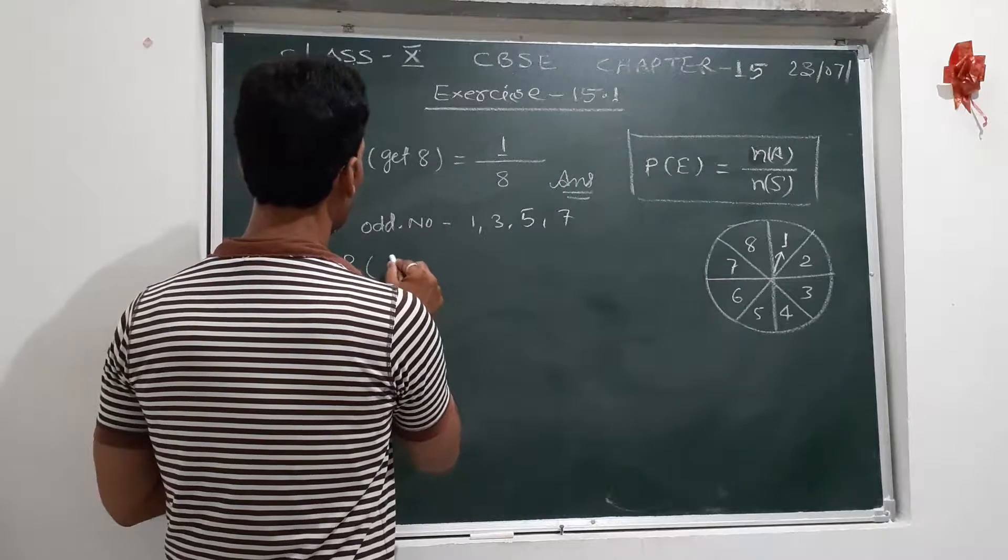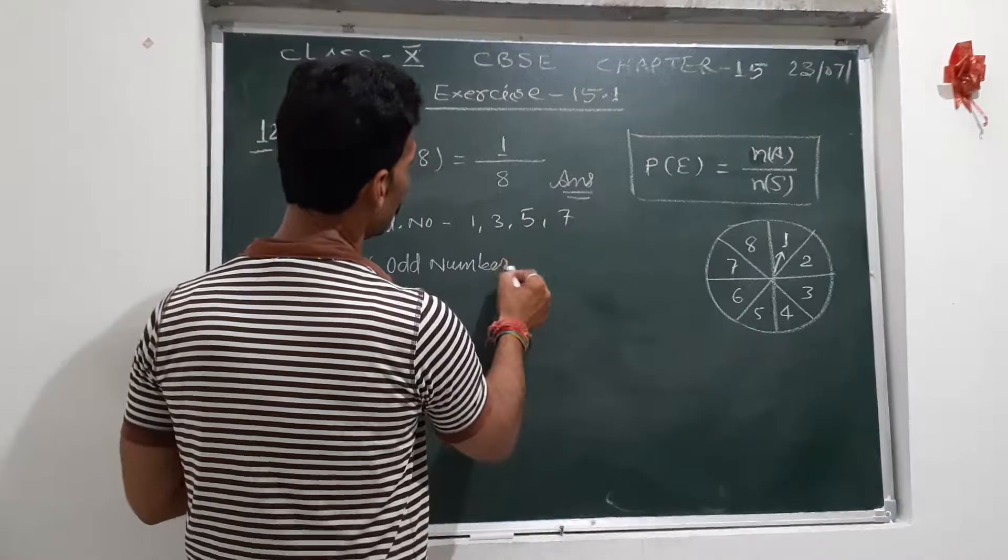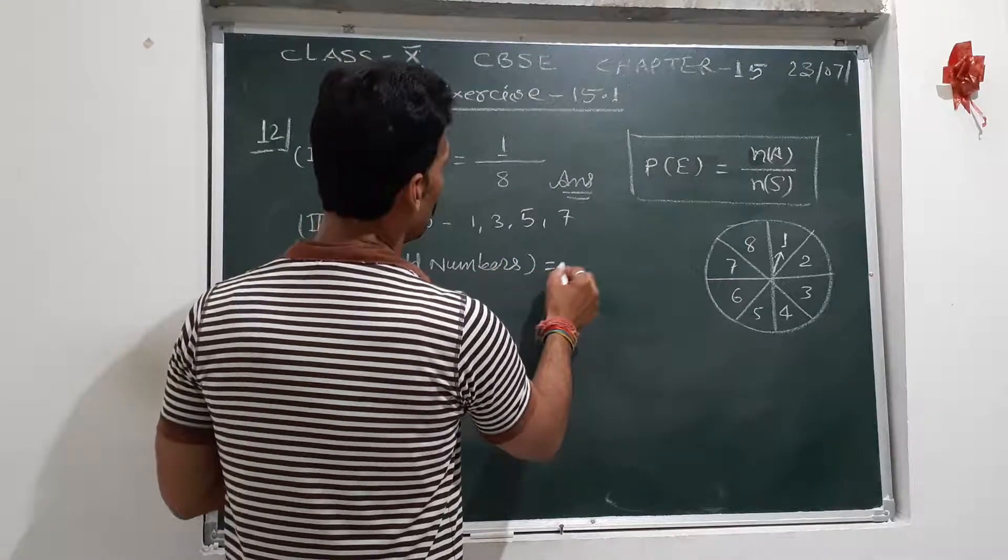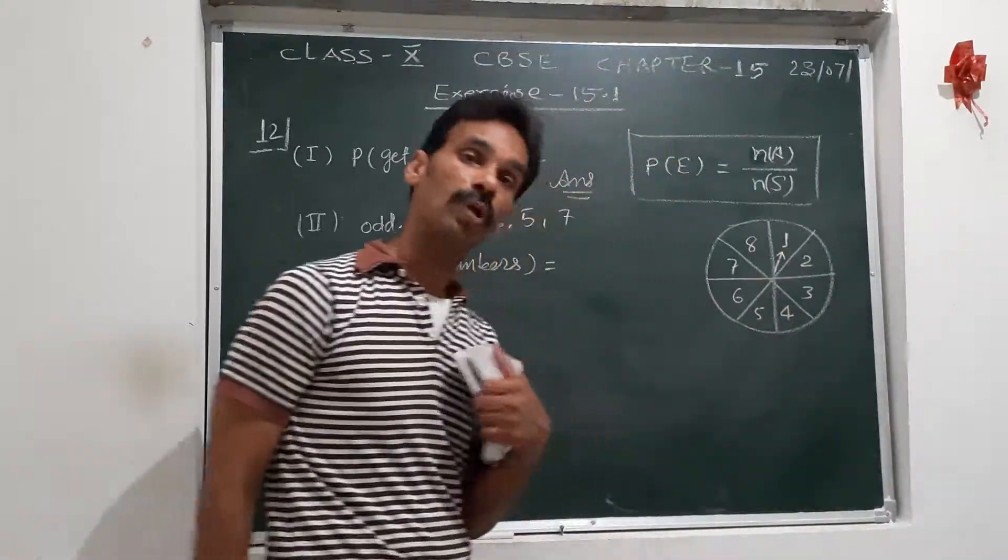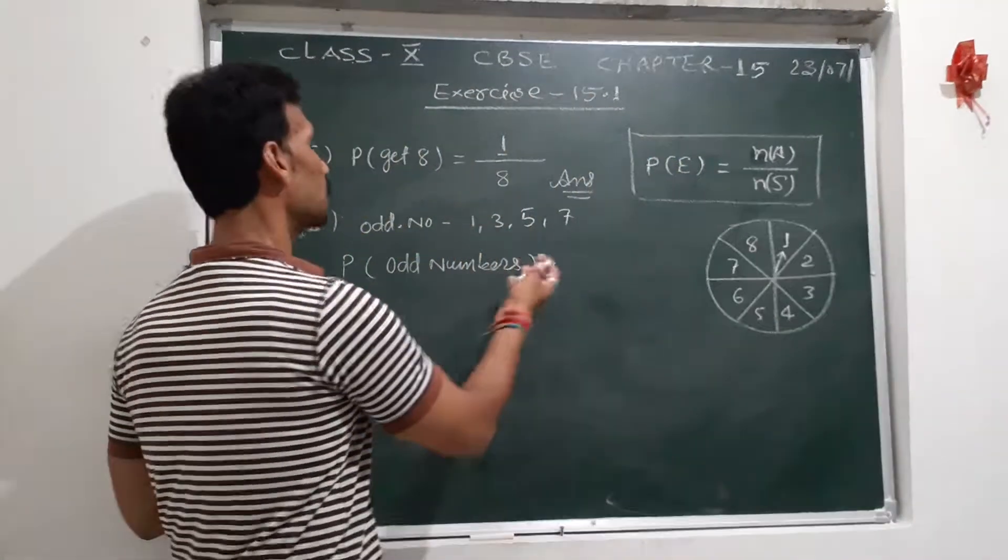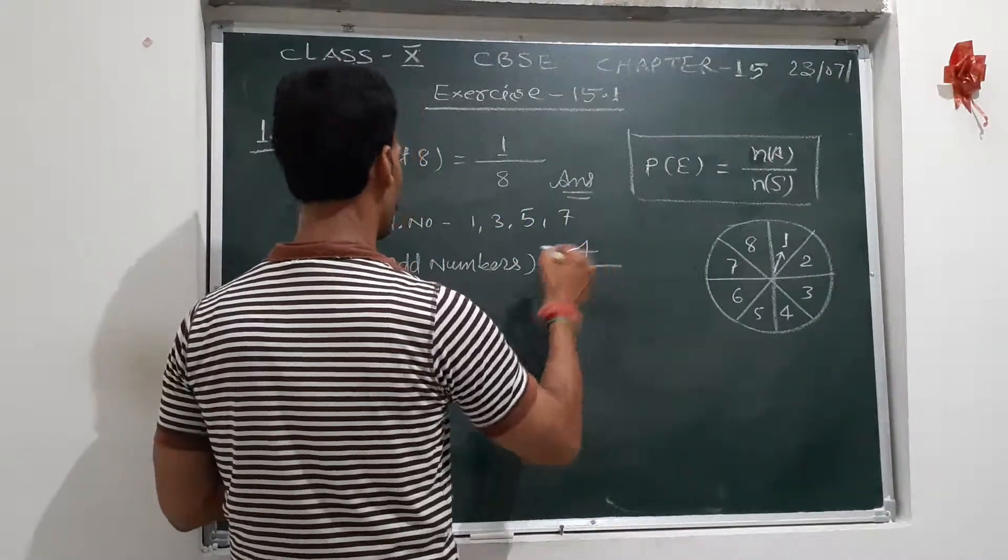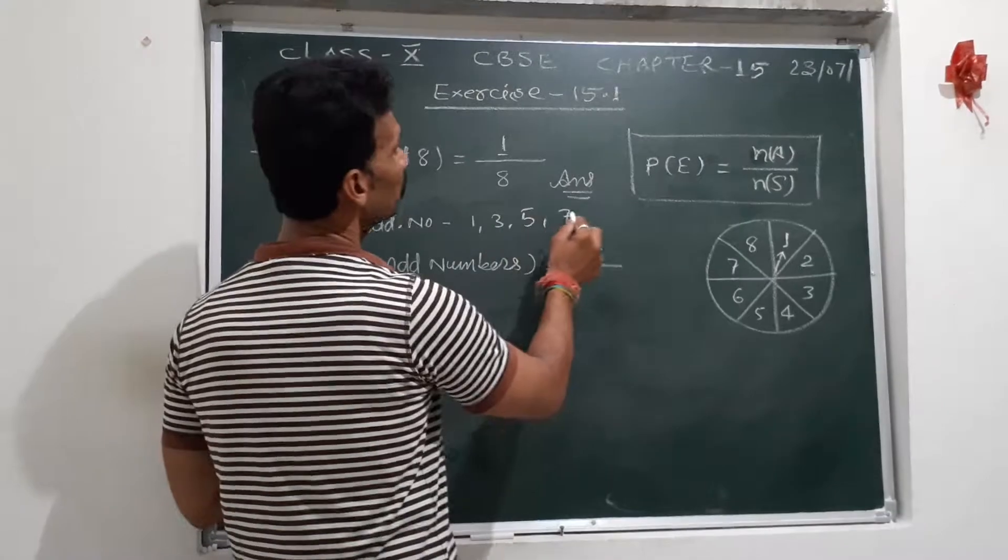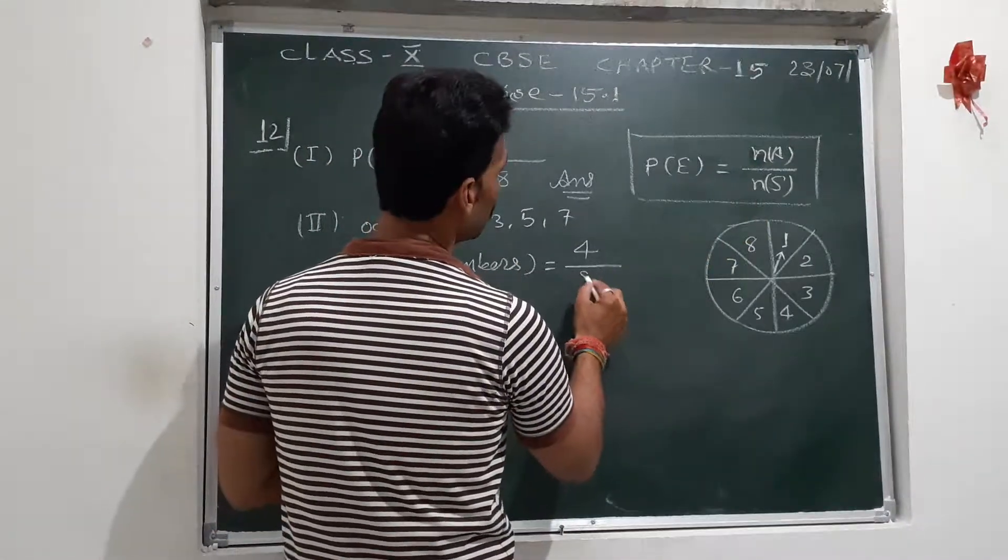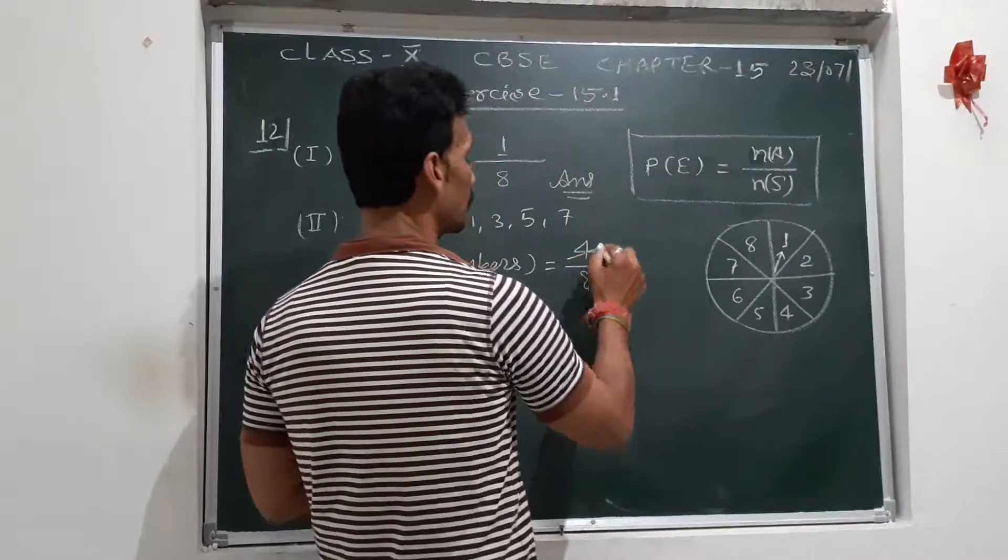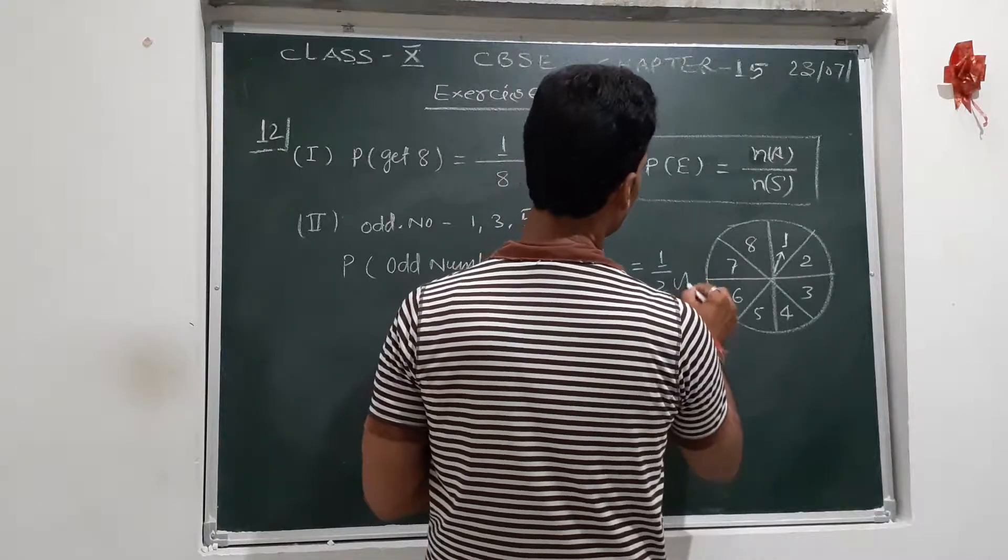Odd numbers are four: one, two, three, four favorable cases. Total number of cases is eight, from 1 to 8. So the answer is 4 upon 8, which equals 1/2. Number of favorable cases. Clear?